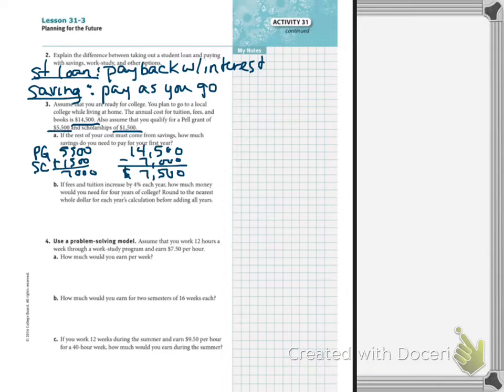If the fees and tuition increase by 4% each year, how much money will you need for four years of college? Round to a whole dollar. So, what we need to do is we're going to have to find the interest for each year and add it in.